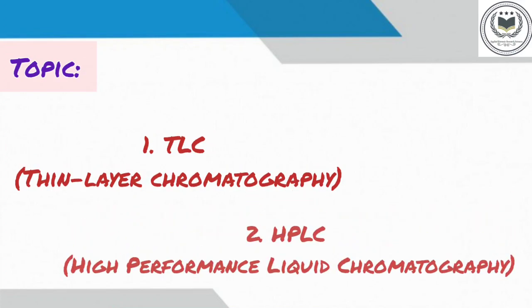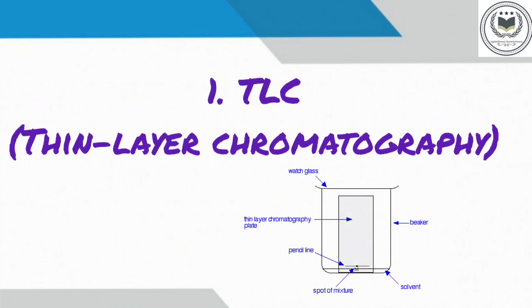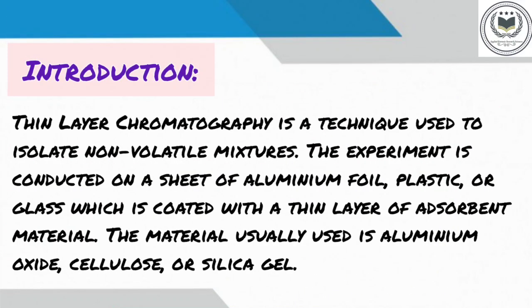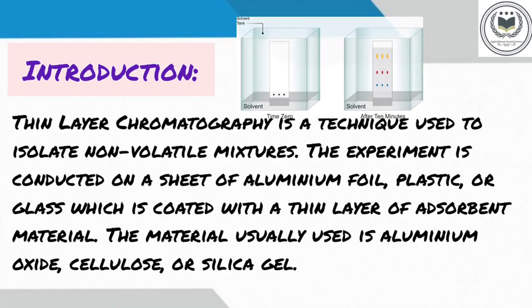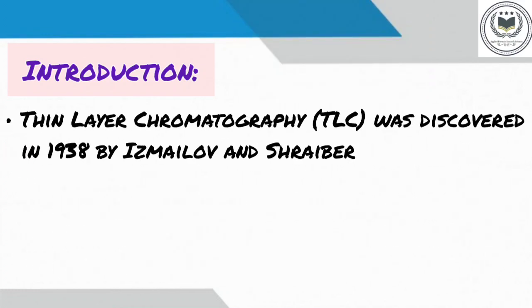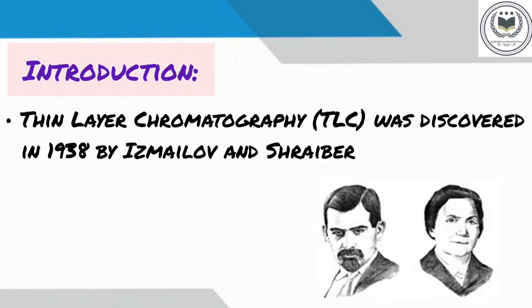Let's move on to thin layer chromatography. Thin layer chromatography is a technique used to isolate non-volatile mixtures. The experiment is conducted on a sheet of aluminium foil, plastic or glass which is coated with a thin layer of adsorbent material. The material usually used is aluminium oxide, cellulose or silica gel. Thin layer chromatography was discovered in 1938 by Ismailov and Schreber.